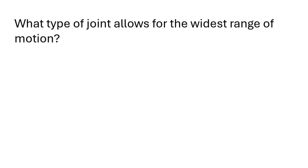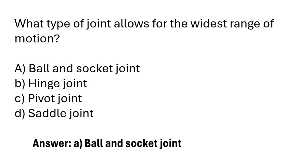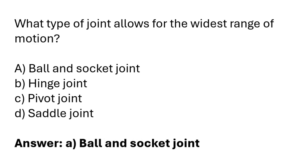Which type of joint allows for the widest range of motion? Ball and socket joint, hinge joint, pivot joint, saddle joint. The correct answer is option A: the ball and socket joint allows for the widest range of motion.